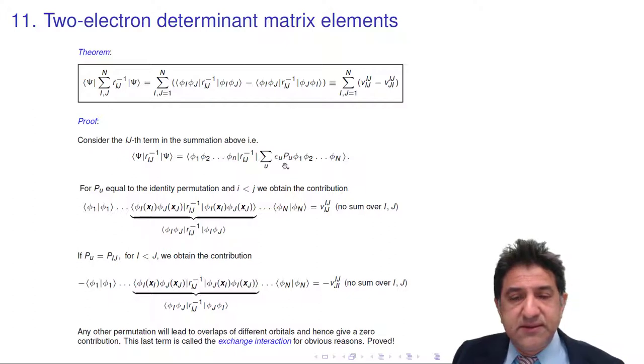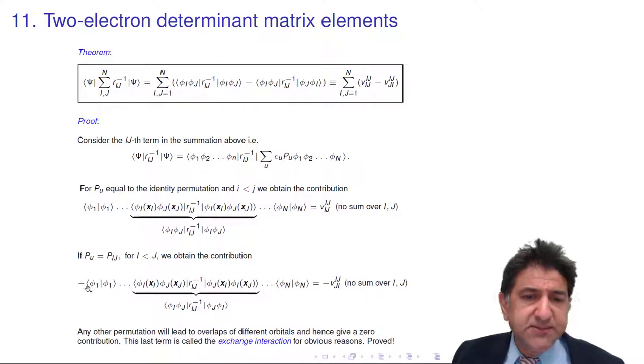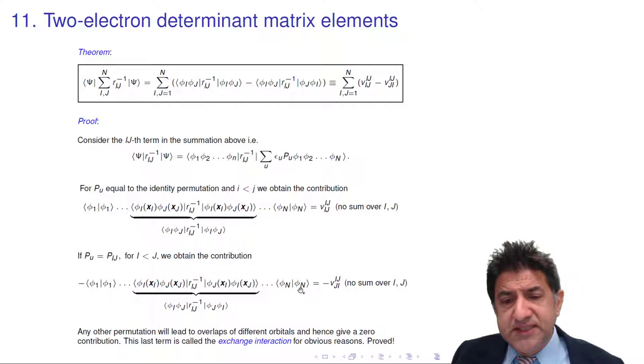Fantastic. Let's go to now another permutation where we swap i and j. We're going to get a minus sign because that's one swap. One swap is odd. We get a minus sign. We get a phi 1, phi 1, phi 2, phi 2, all the way up to phi n, phi n. But wait.